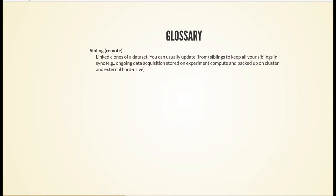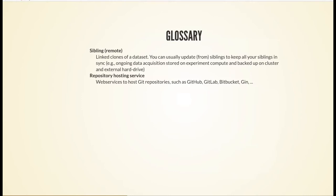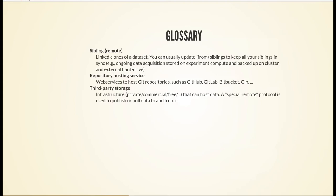One use case where siblings are really handy is a backup scenario with ongoing data acquisition — for example, acquiring EEG data with a new participant every day. The data first appears on the experiment computer, you save it there, and then synchronize it with backup locations like a cluster, server, external hard drive, or your own computer. Repository hosting services host Git repositories, and because datasets are Git repositories, they also host datasets. Third-party storage providers are also referred to as special remotes in this context.